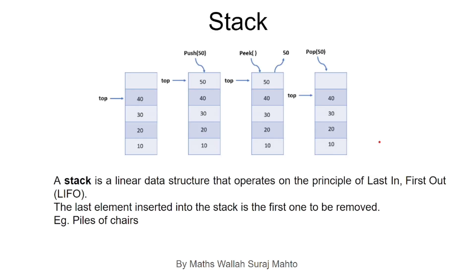First, we cover the stack. The stack is a linear data structure which operates on the last-in-first-out principle. We will explain through an example. In this example, there are 4 elements inserted: 10, then 20, then 30, and then 40. After inserting 4 elements, the top element is 40.